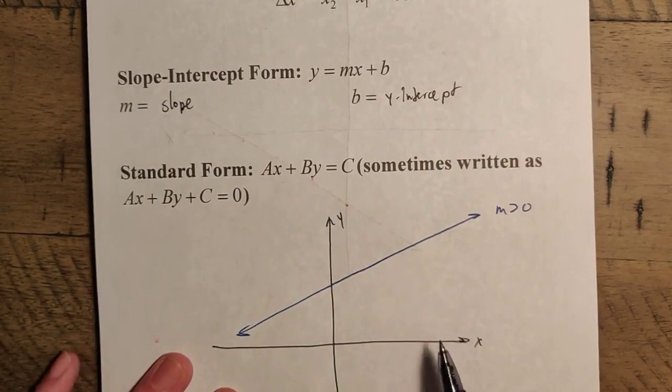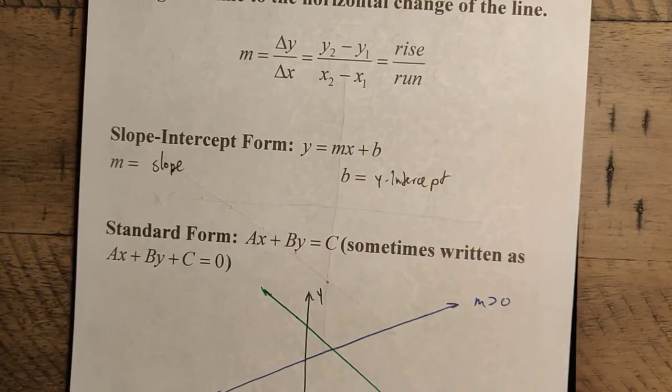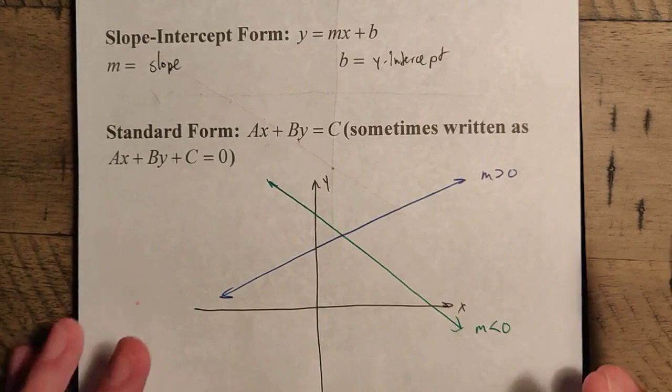So we can make things a little easier with the run. Let's say the run is positive, just without loss of generality. That means as we're moving to the right, the rise is negative. So that means it's going to drop as we go. So in this case here, something like this. We can draw a line like so. Here, M is less than zero. Our rise is negative, our run is positive. Alternatively, you can go the other way around.